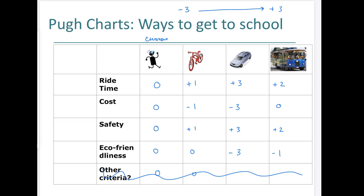Now, for a weighted Pugh Chart, you assign importance to each criterion. For example, if ride time is the most important thing, you give it a weight of three. Cost might have a weight of two. As a teenager, you might not be as concerned about safety or eco-friendliness, so those are both weighted as one.